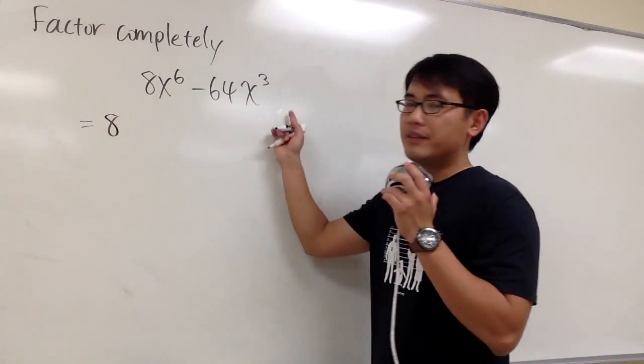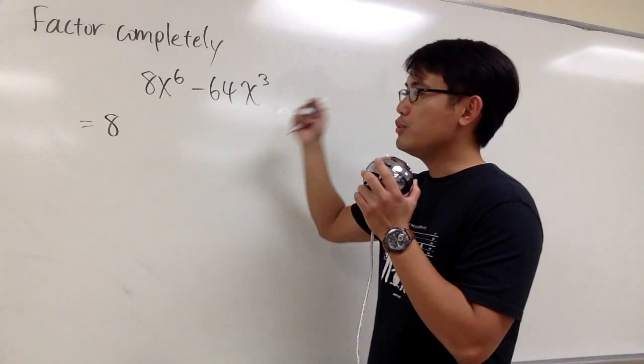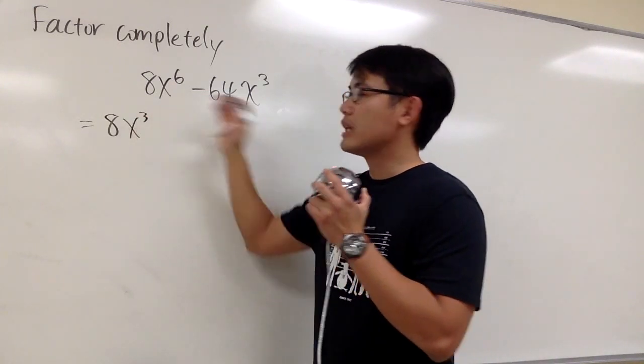And then since they both have the x, we can factor out x to the lower power, which is the 3. So x to the 3rd power can be factored out first.